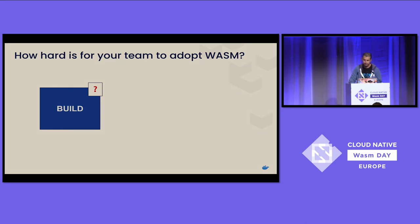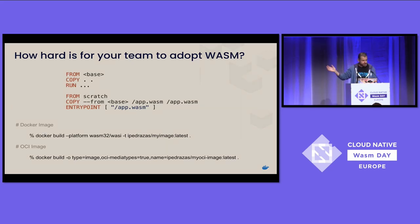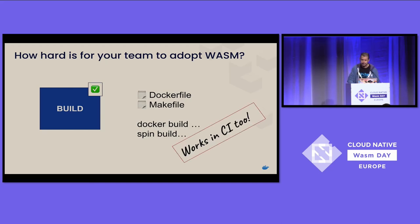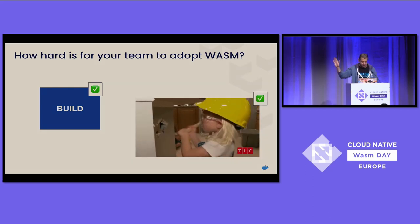So, build. What do we have with build? Well, we can build once — a model the old way. We can compile, use makefiles, use Dockerfiles, use OCI images. It's very similar to what we've been doing: creating artifacts. And it works in CI. Build — check.